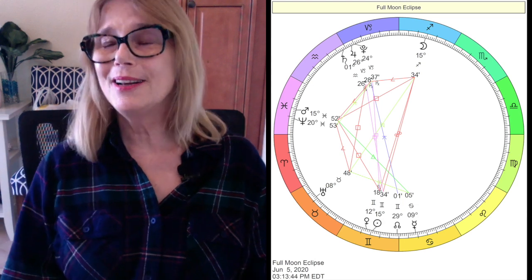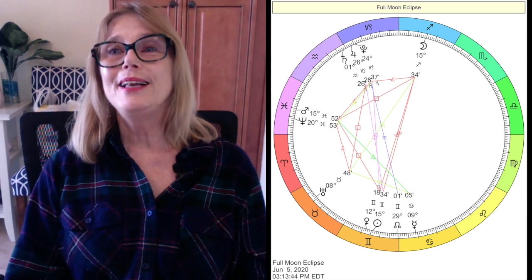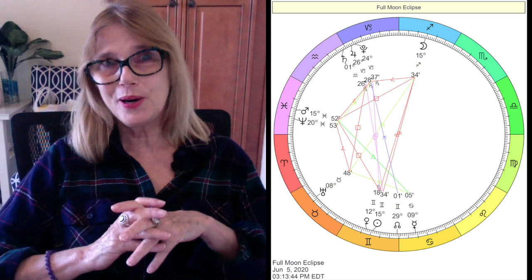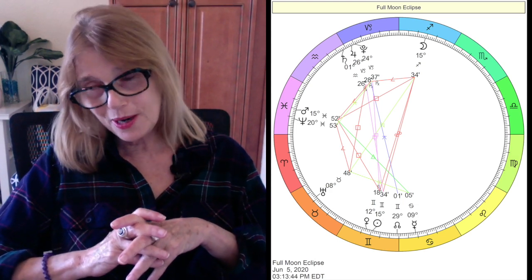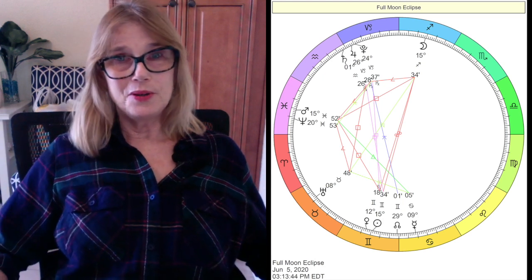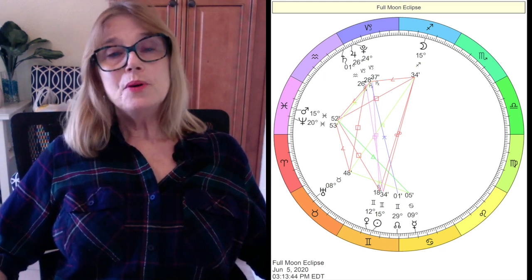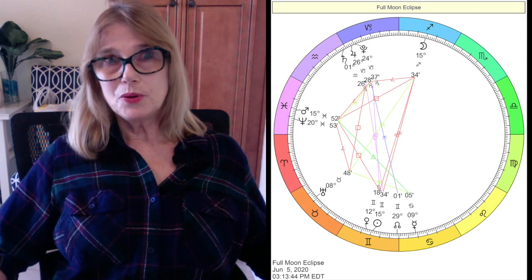When I first looked at this chart, it's almost like I didn't really want to read it because it's kind of glaring. You look at the T-square, the glaring T-square, it all points to Mars and Neptune in Pisces. And the moon. So people are getting very emotional. They're getting emotional. There's polarity.